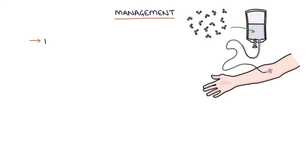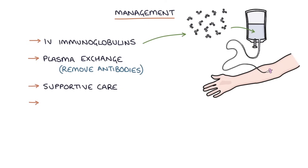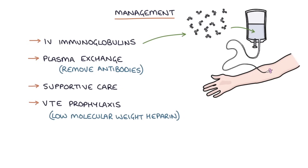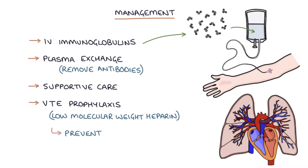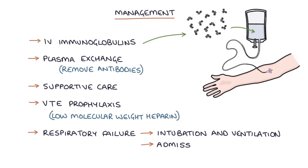Management of Guillain-Barré involves IV immunoglobulins and plasma exchange to try to remove some of those antibodies, along with supportive care. Importantly, patients need venous thromboembolism prophylaxis — such as low molecular weight heparin or enoxaparin — to prevent blood clots, as pulmonary embolism is a leading cause of death. In very severe cases with respiratory failure, patients may need intubation, ventilation, and admission to the intensive care unit.